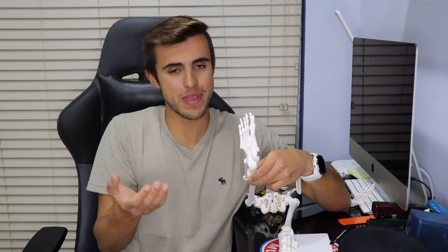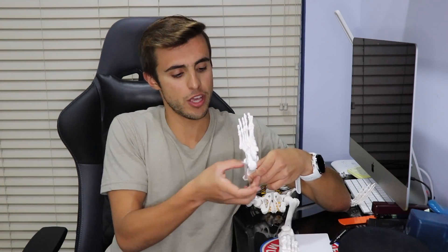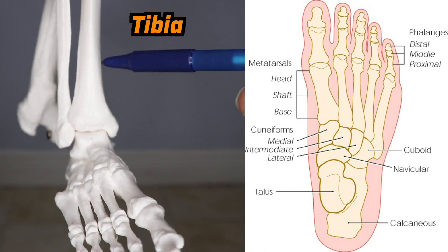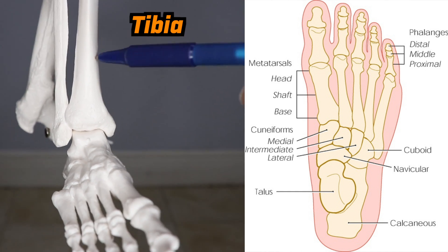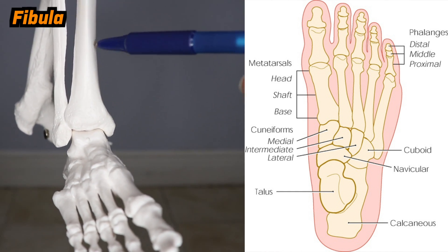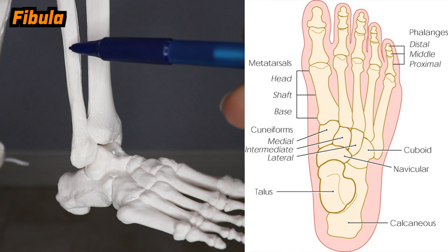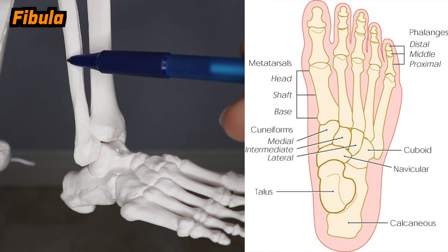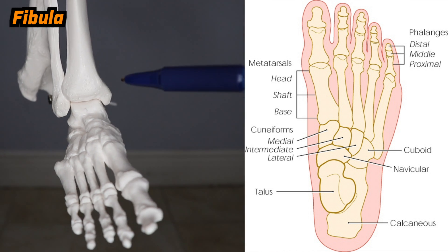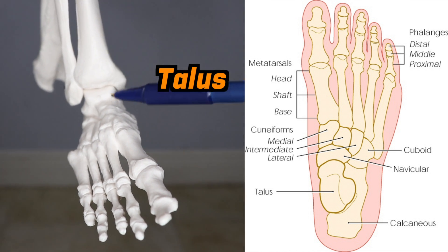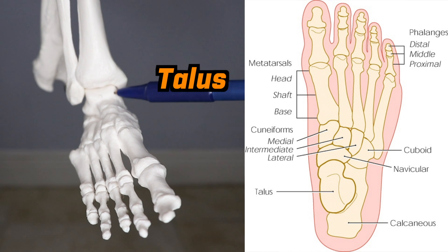Let's start off medially with your tibia, which is your weight-bearing bone. Lateral to that, you're going to have your fibula. Right below those structures, you're going to have your talus, kind of on the medial aspect.